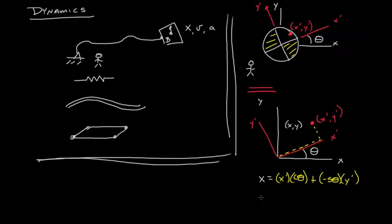In a similar way, we could also find out what the y coordinate is. That's going to be y equals cosine theta y' plus sine theta x'. In all likelihood, you've seen this transformation before.